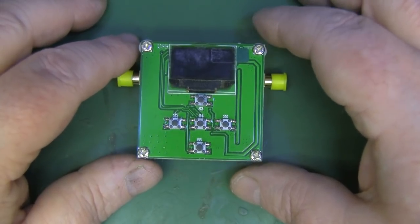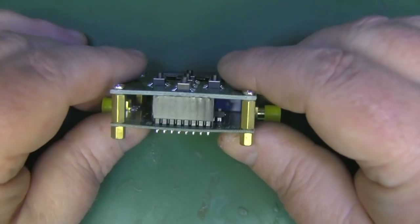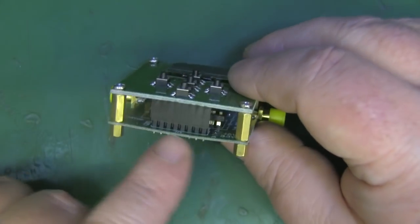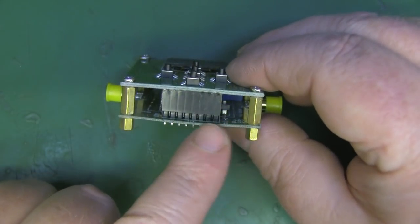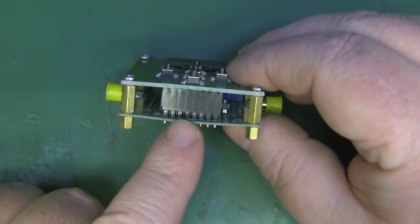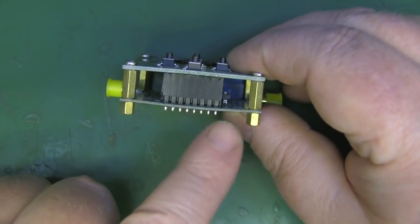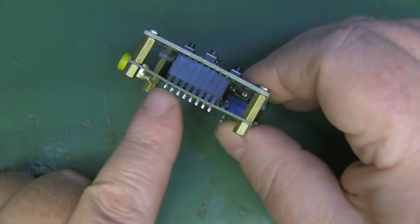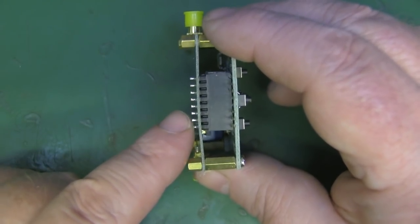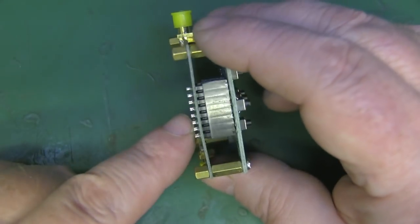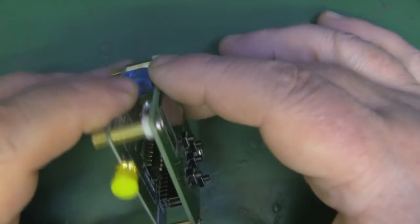But before we take this over to the test bench to see how accurate it really is, I just want to show you some of the construction features of this that are a little bit dodgy. You can see here we've got these posts and they're a little bit short for the unit. You can see how they've bent up this bottom PCB here. That's not going to be very good over time. You're probably going to get a dry solder joint and it'll just rip away the solder pad. So I want to sort that out before I start using it.